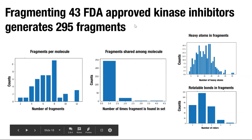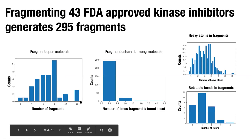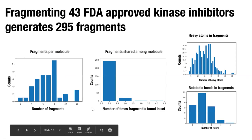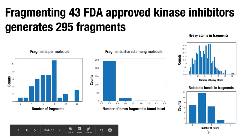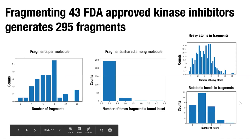Here's some statistics on the kind of fragments we get using this scheme. We're looking at the fragmentation of 43 FDA-approved kinase inhibitors. Using the initial scheme, we have 295 fragments from those 43 molecules. Most molecules produce a reasonable number of fragments. The distribution of heavy atoms and rotatable bonds shows most fragments have between one and three rotatable bonds, with very few having four to five.